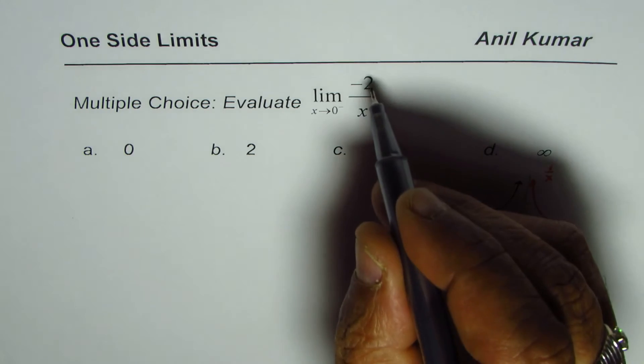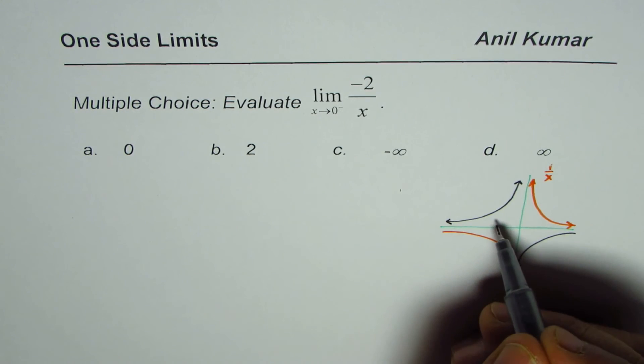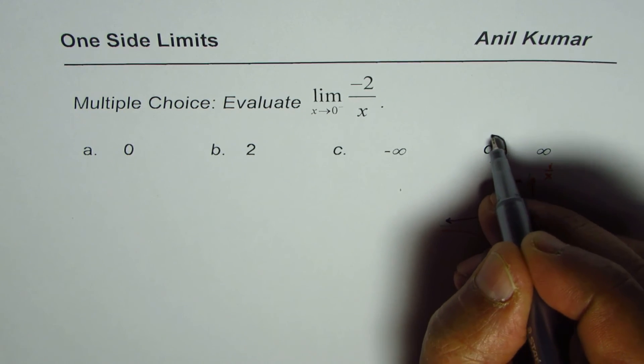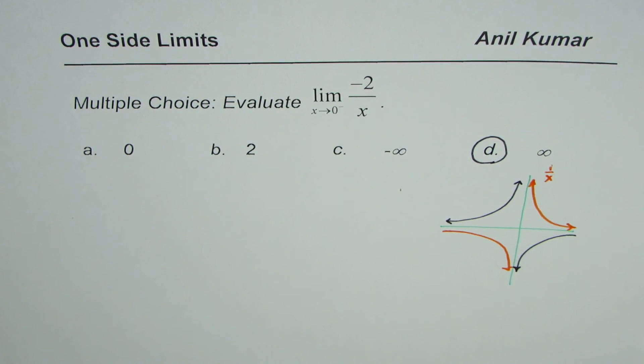So, that will be the graph for the given function. And when you approach from the left side, you clearly approach positive infinity. So, that is the solution. Thank you.